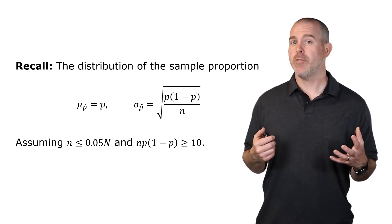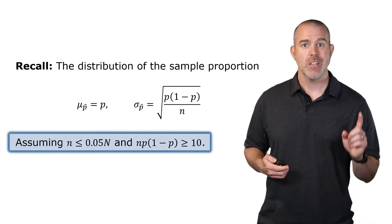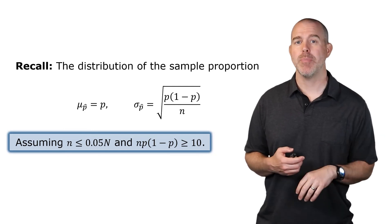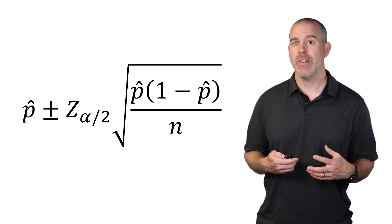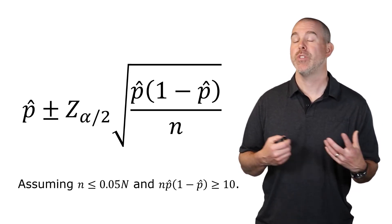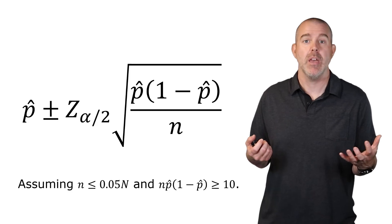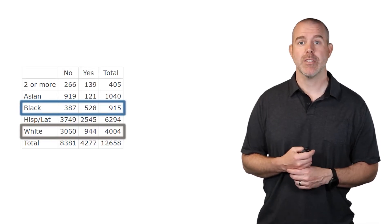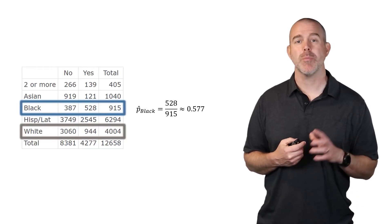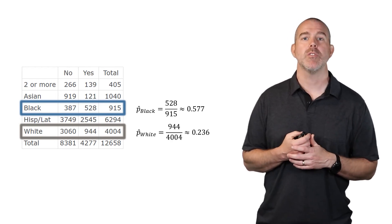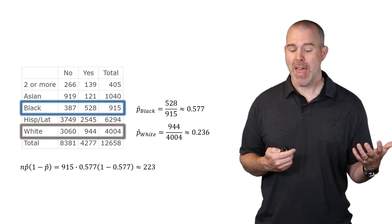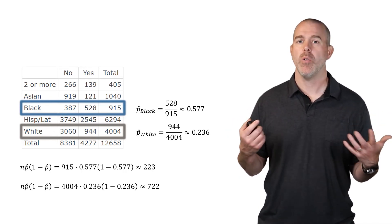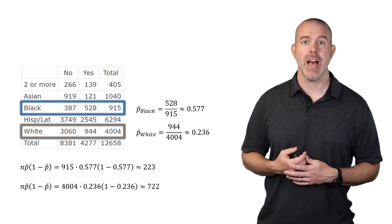This formula is based on the distribution of the sample proportion, so two conditions must hold: the sample size must be less than or equal to 5% of the population, and n times p times one minus p must be at least 10. For the confidence interval, since we don't know p, we check using p-hat: n times p-hat times one minus p-hat must be at least 10.